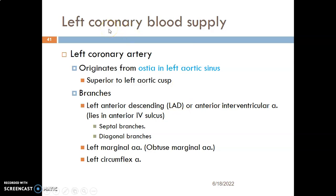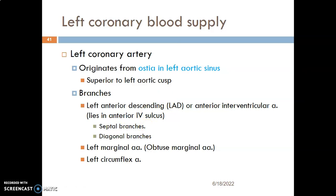The left coronary artery originates from the ostia located in the left aortic sinus, above the left aortic cusp. It is located in the left coronary sulcus between the left atrium and left ventricle. Its branches include the left anterior descending (LAD), also called the anterior interventricular artery, which gives septal branches to supply the interventricular septum and diagonal branches. It also gives a left marginal artery to supply the margins of the left atrium and left ventricle.